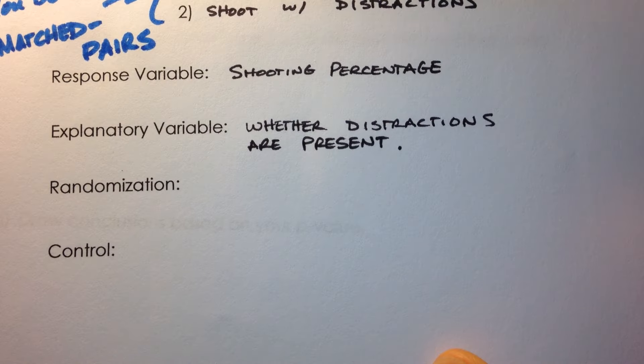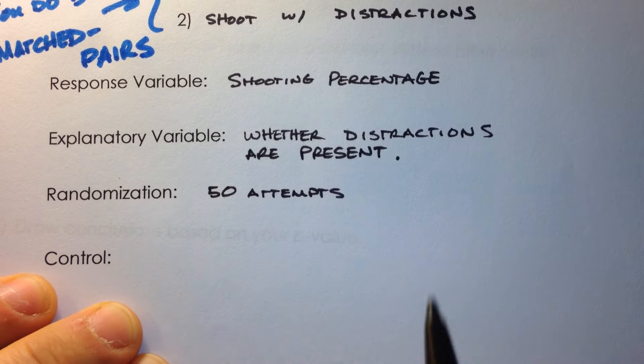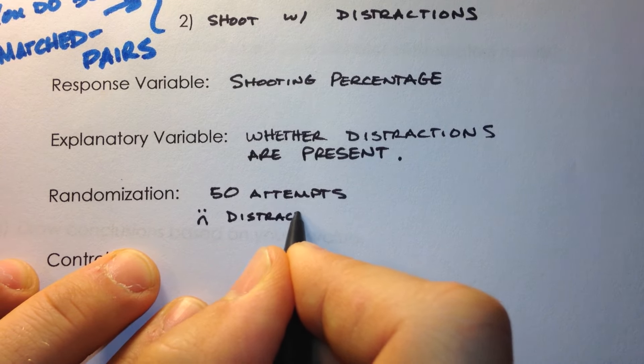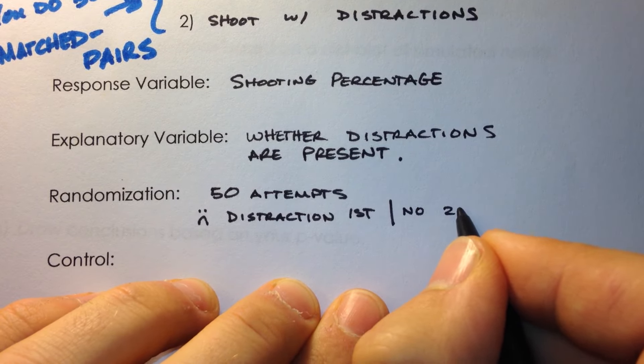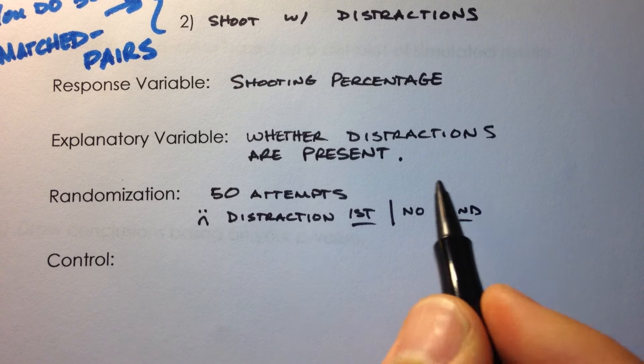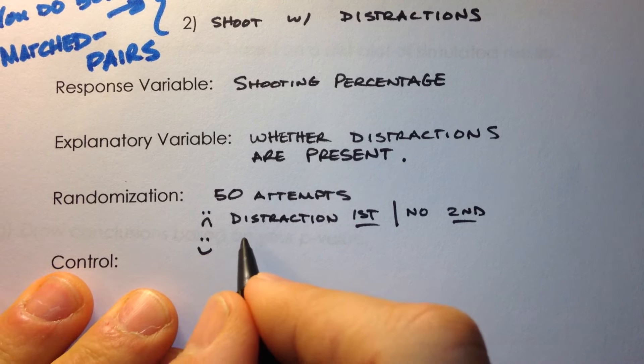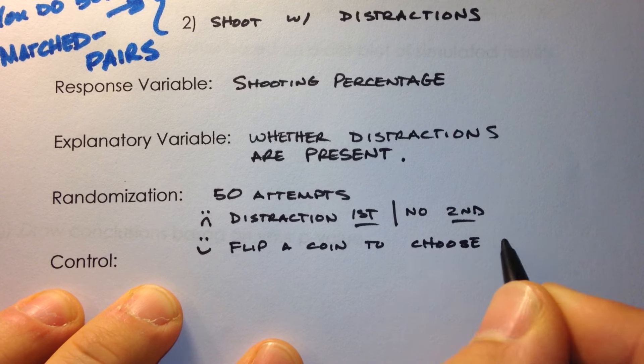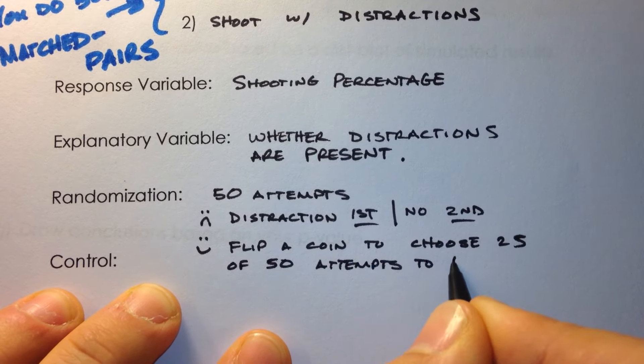We need to randomize the shots in this experiment. And so let's suppose that they're going to be 50 attempts. In other words, you're going to take 50 free throws. Here's what we can't do. We can't do distraction first and then no distraction second. And the reason that we can't do that is simply that, what if you learn something? What if your shooting gets better as you go along? Then that's going to unfairly benefit these shots. What we would do instead is use some sort of randomizing procedure, like flip a coin, to choose 25 of the 50 attempts to have distraction.